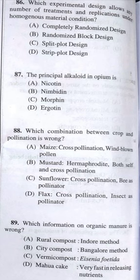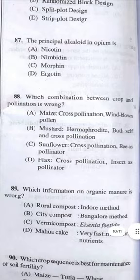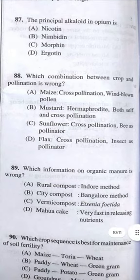Question 87: The principal alkaloid in opium poppy is morphine — answer C, used for cough syrup. Question 88: Which combination between crop and pollination is wrong? Sunflower is hermaphrodite but here it says cross-pollination by bees — so option C is wrong.